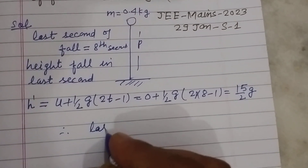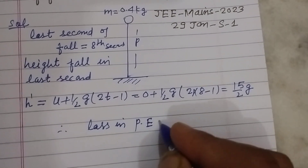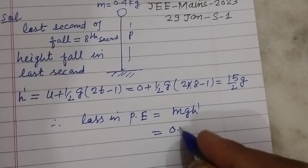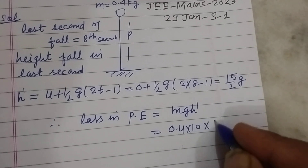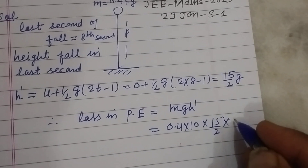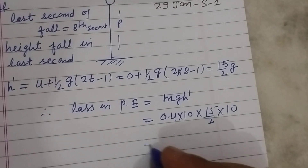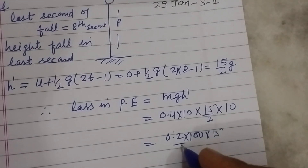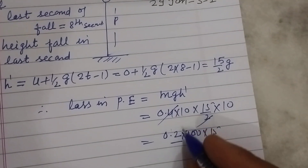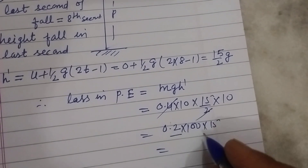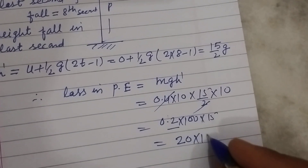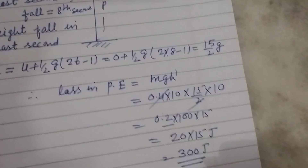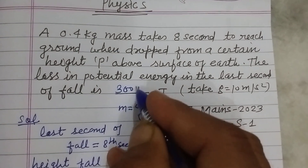Therefore, loss in potential energy is mass times g times h, which is 0.4 times g times 15 over 2. Taking g as 10, this gives 0.4 times 10 times 15 over 2, which equals 0.2 times 100 into 15 over 2 — that is 20 into 15 Joule, giving 300 Joule. 300 Joule is the answer to this question.